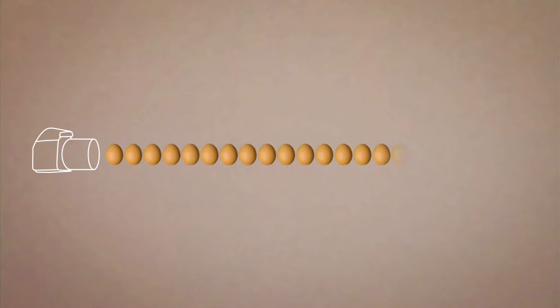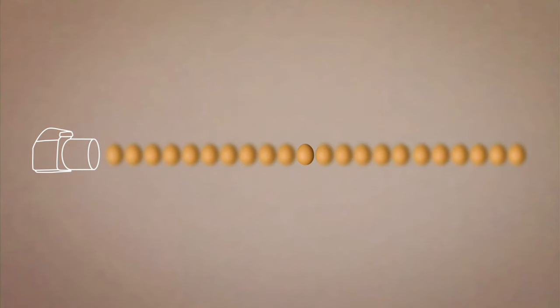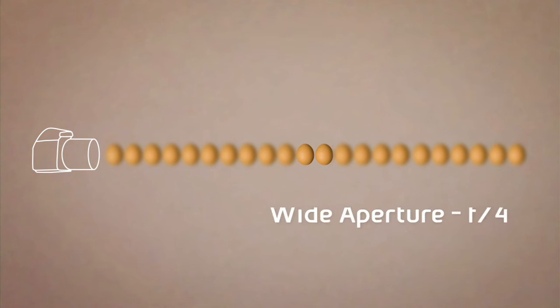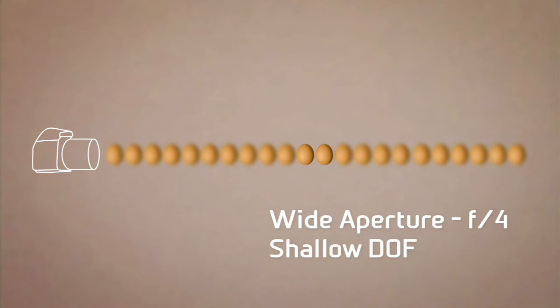For many photographers, this numbering system can be confusing in the beginning, so here's a simple rule of thumb to help you remember. Imagine you have 22 eggs lined up in a row running away from the camera. Focus your camera on one of the middle eggs. If you want just that egg to be in focus and all the others out of focus, use a wide aperture such as f4 for a shallow depth of field.